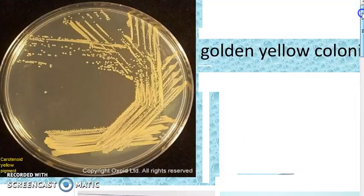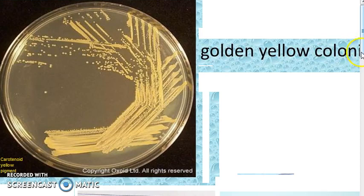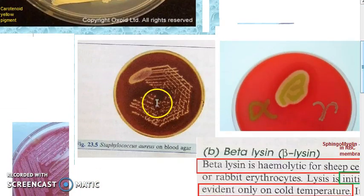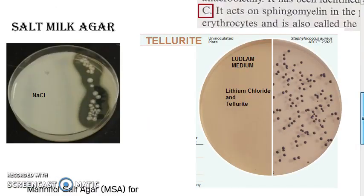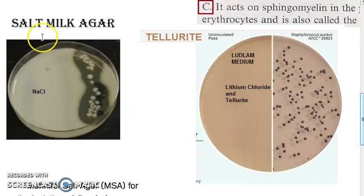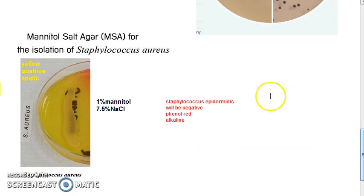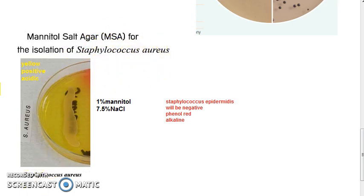To revise: on nutrient agar, yellow colour pigmentation is due to carotenoid. On blood agar, you will have beta hemolysis. The selective media are Salt Milk Agar and Ludlam's media. To differentiate Staphylococcus aureus and Staphylococcus epidermidis, use Mannitol Salt Agar — which is specifically for isolation of Staphylococcus aureus.